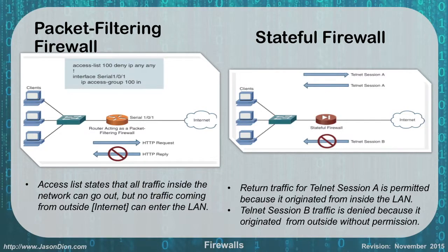Looking at a packet filtering firewall, an access list that states 'deny IP any any' means any traffic coming from anywhere going to anywhere is denied. On the stateful firewall, if I initiated a Telnet Session A, return traffic for Session A can come back in. But if someone from outside tries to start a new Telnet Session B that I never requested, the firewall will prevent it. The stateful firewall symbol in the diagram resembles a diode in electronics — diodes are one-way, which illustrates that if you start traffic in one direction, return traffic is allowed, but unsolicited inbound sessions are blocked.